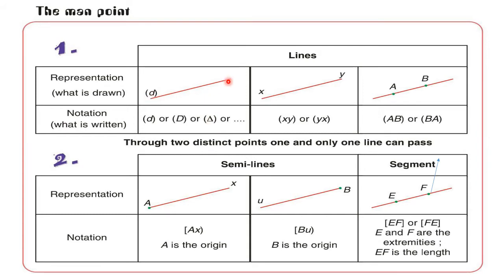I will start with Activity A on page 24, with the first table, table number 1. As you see, I have here three different lines. This is the representation — what is drawn, the drawing. Notation is what is written. So let's start with the first line.